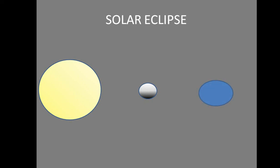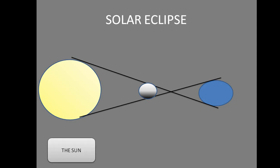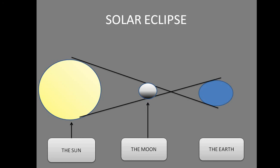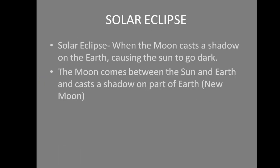Coming to the solar eclipse — again, all three come in a straight line. When the light reaching the Earth is blocked by the moon, or the moon comes in between the sun and the Earth, the shadow of the moon falls on the Earth. That is what causes a solar eclipse.